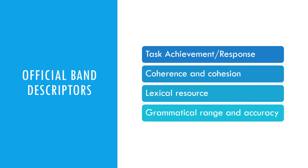Understanding these band descriptors is vital to achieve the required band in writing. Unless you understand each part and are able to reflect on the requirements of each descriptor, achieving the required band will remain a nightmare. If you are struggling around band 6 or 6.5, it is mainly due to a lack of understanding of one or more of these descriptors. Take your time and set your mindset aligned with these requirements — it would help you get out of many myths and false assumptions causing low scores even after multiple attempts.